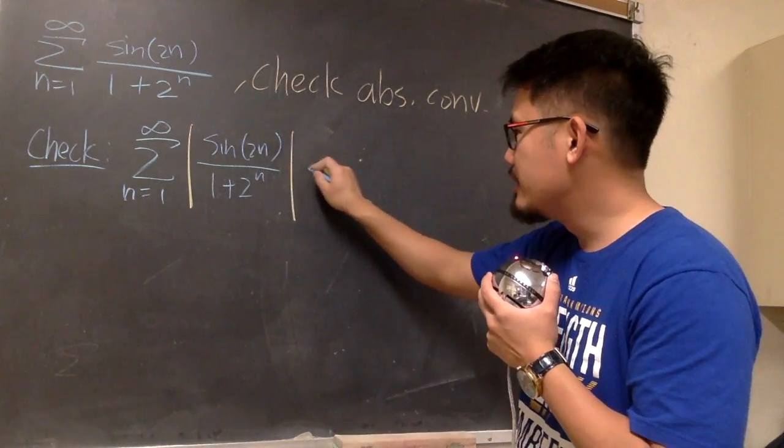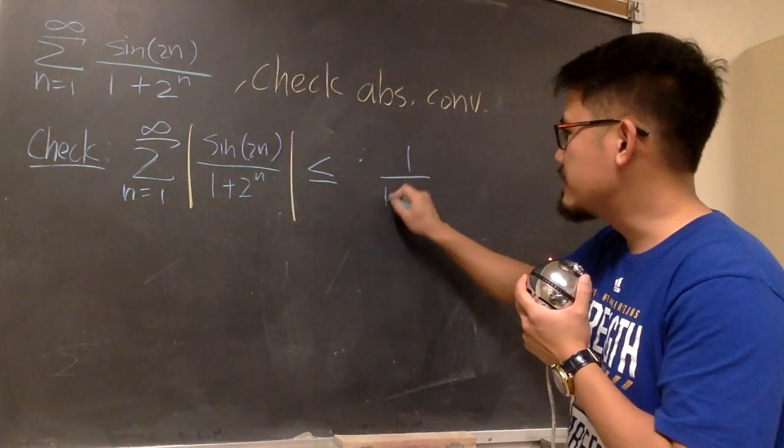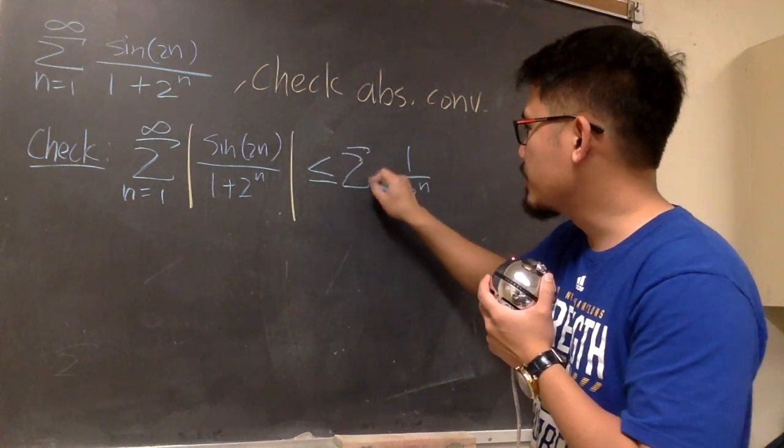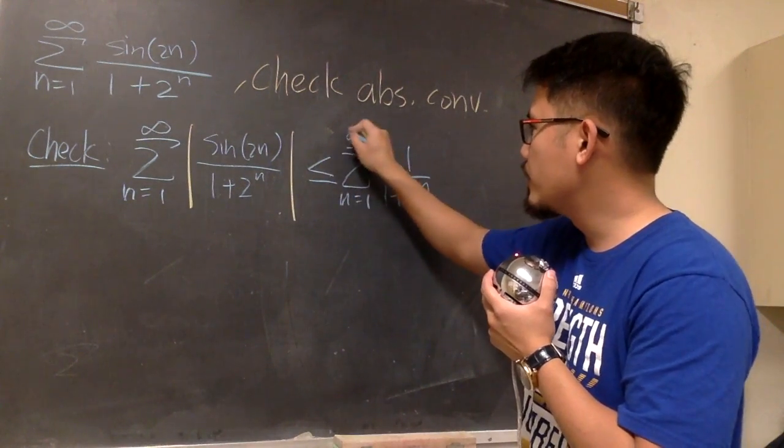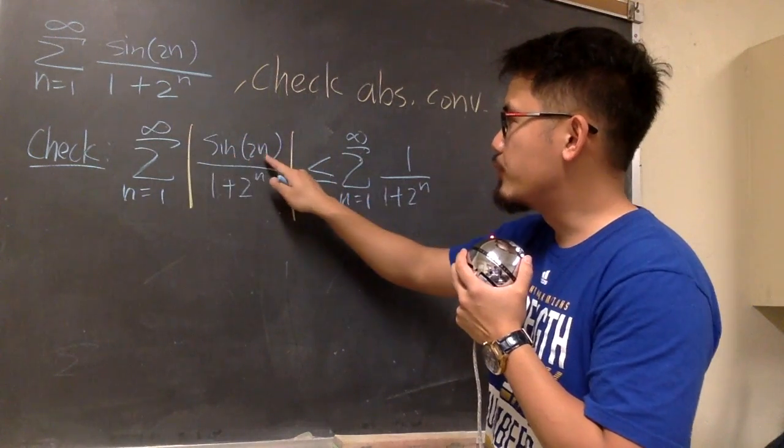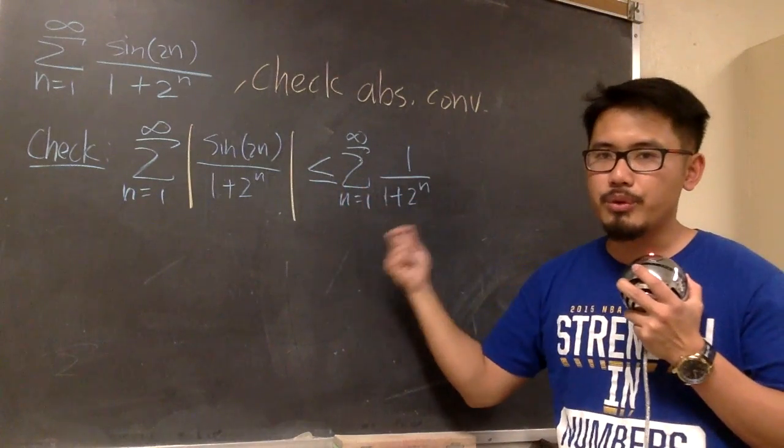So I can write this down. This is less than or equal to, we have the 1 on the top, and then the denominator stays the same, 1 plus 2 to the n. And also, let me write down the sigma notation, and it goes from 1 to infinity. Once again, absolute value of sine of 2n is less than or equal to 1. That's how I was able to build this up.